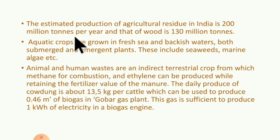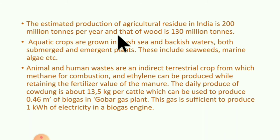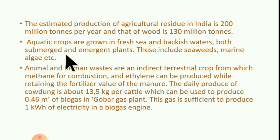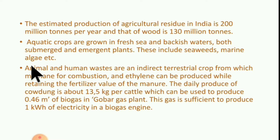The estimated production of agricultural residue in India is 200 million tons per year. That of wood is 130 million tons. Aquatic crops are grown in freshwater and marine waters, both submerged and emergent plants. This includes seaweeds, marine algae, etc.